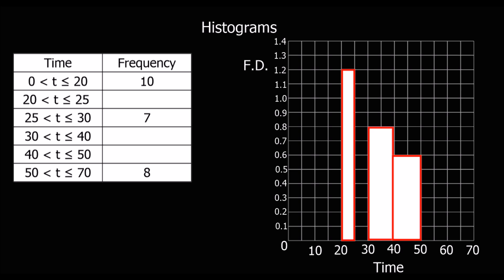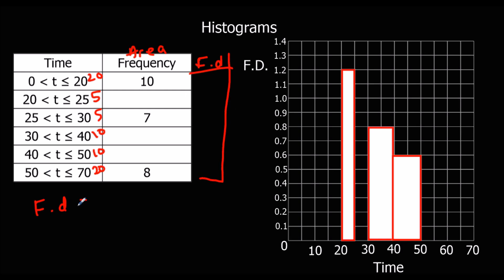So here's a semi-completed histogram and we're going to complete the rest of it. We're adding the column for frequency density, which is the height of the bar - remember this one's the area, and the width is how far in between these two values. Frequency density is frequency divided by class width. So: 10 divided by 20 is 0.5, 7 divided by 5 is 1.4, and 8 divided by 20 is 0.4.